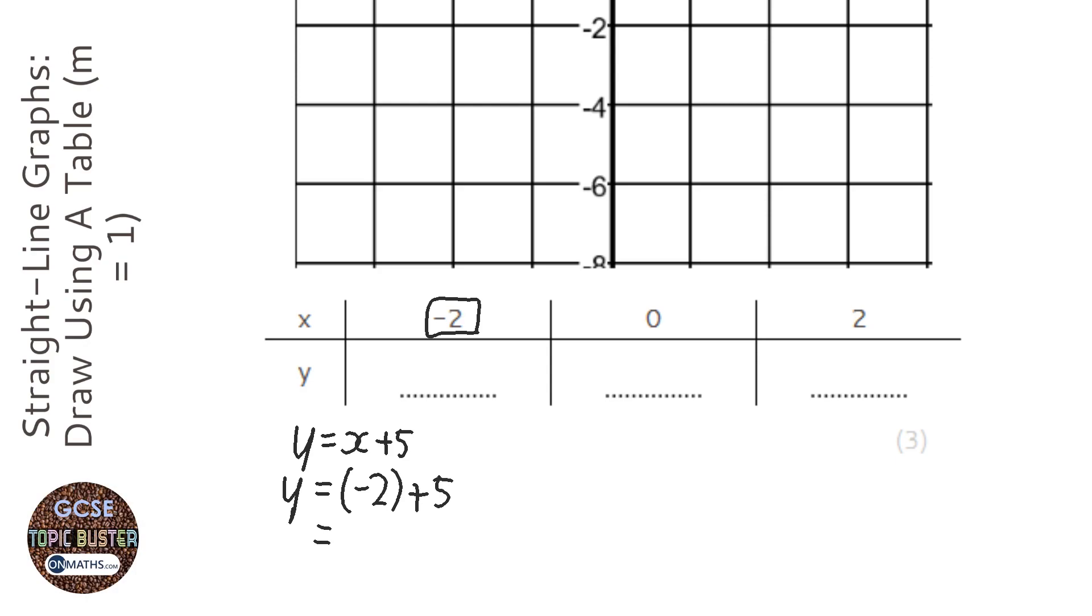So -2 + 5. If you go to -2 on the number line and go right 5, you end up at 3, and so we've got the y value there. We're going to do the same thing with 0.